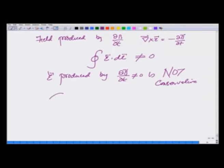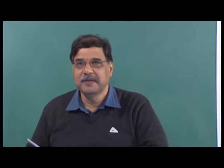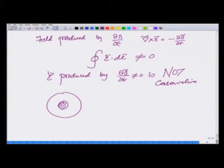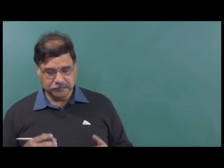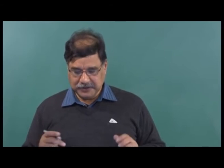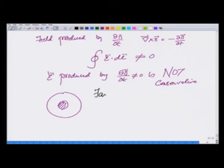That means if I take a path, circular path, around the changing magnetic field, more I go around more energy I gain—that is the meaning of non-conservation. Otherwise, if it was conservative, every time I went around the network done will be 0, but here more I go around more is the energy that I gain. So this is Faraday's law of fields.